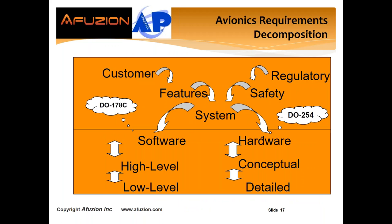We've got avionics requirements decomposed from the customer, our company's proprietary features, regulatory requirements, and safety requirements. Then software on the left, and hardware for this webinar. Note there's only one level of hardware requirements, unlike software DO178 with two levels. However, hardware has two levels of design unlike software which has one: conceptual design — what does the external I/O of that hardware look like — and detail design — how about the implementation, are we ready to write logic?